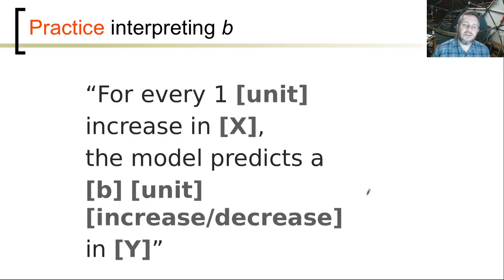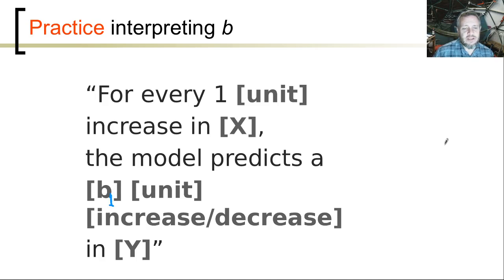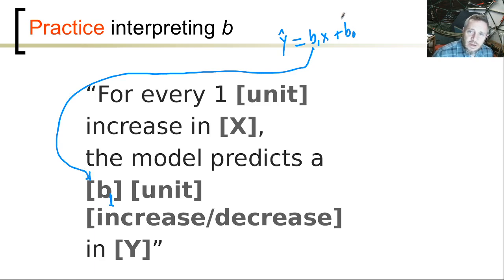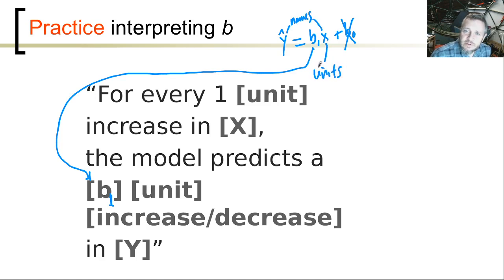The interpretation is: for every one, whatever the units are, increase in whatever X is, the model predicts a b1 unit — whatever the slope number is — increase or decrease in Y. So you've got this equation: y-hat equals b1 x plus b0. Some people do b0 plus b1 x — it's common both ways. You need to know the names and the units of X and Y so that you can talk about this stuff.